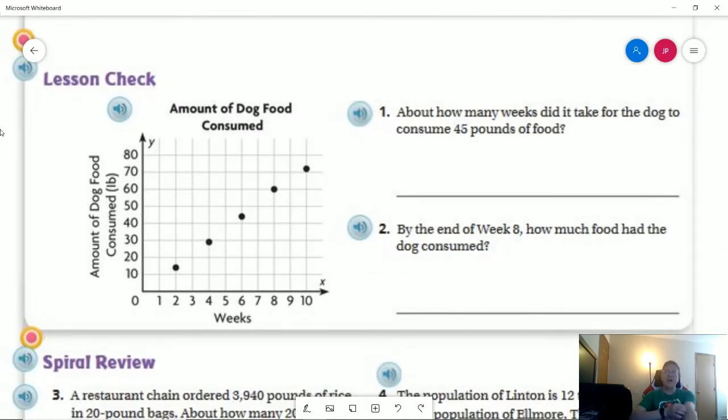So number one, how many weeks did it take for the dog to consume 45 pounds of food? It would be right here. We can go across and then down, and that would be six weeks.